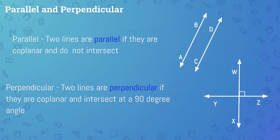So, parallel and perpendicular. We have line AB and line CD. Two lines are parallel if they are coplanar and do not intersect. Coplanar is a term you learned a couple lessons ago — coplanar means that those two lines are on the same plane. So if two lines are on the same plane and they do not intersect, we know that they are parallel.